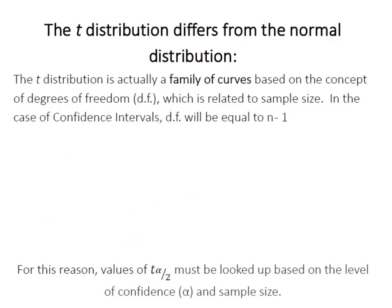Our t distribution is directly related to sample size and is based on the concept of what we refer to as degrees of freedom. Degrees of freedom is simply n minus 1. In other words, it's the number of variables in our formula that can vary, and in this case for confidence intervals it will be n minus 1. So if I have an n equal to 20, then I'll have degrees of freedom equal to 19. If my n was 25, degrees of freedom would be equal to 24.